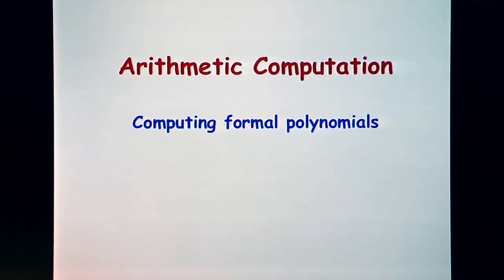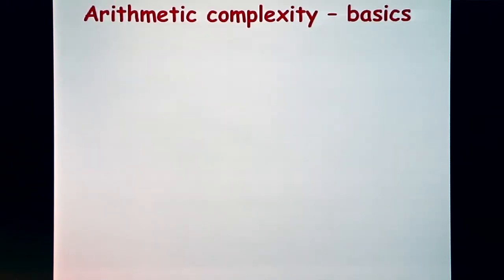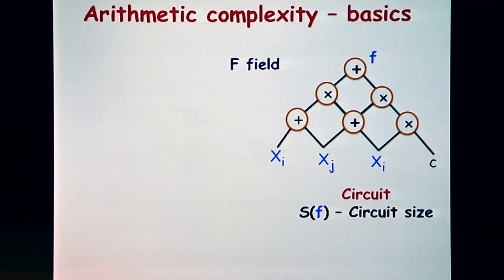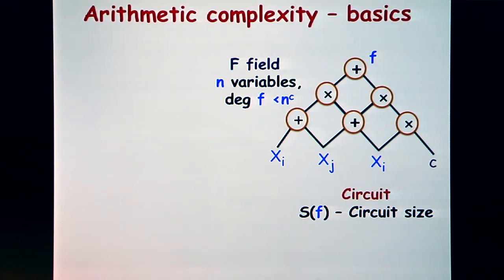I want to talk first about arithmetic computation: how do you compute formal polynomials using just addition and multiplication? Working over some field, a circuit or program takes the variables of your polynomial, maybe some field constants, and applies a series of additions and multiplications. The complexity measure is how small such a circuit can be — that's S(f). We'll only consider polynomials with n variables of degree at most polynomial in n, like the permanent and determinant.